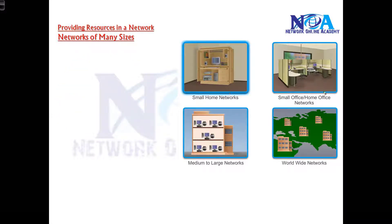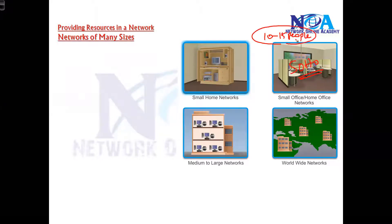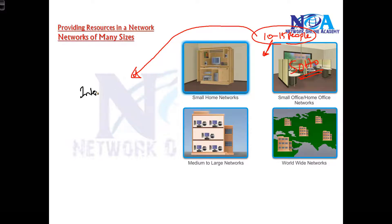If you go beyond that, you may also have something like small office home office networks — in short, we call it SOHO. These are the types of networks for small businesses where you have around 10 to 15 people working in your company, like maybe you're running a travel agency or some small business setup, where the primary business is completely based on the internet.